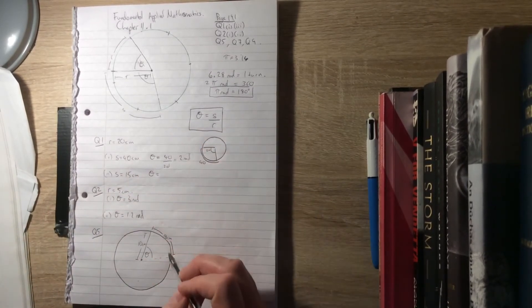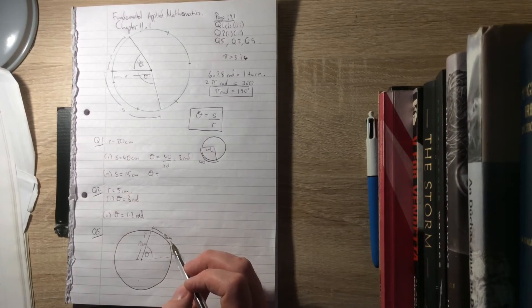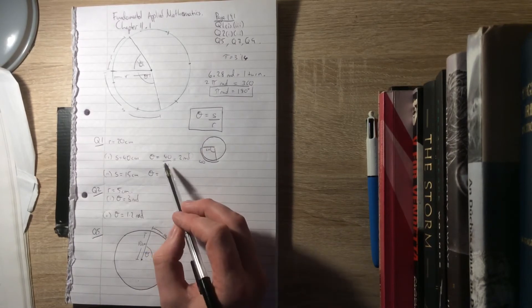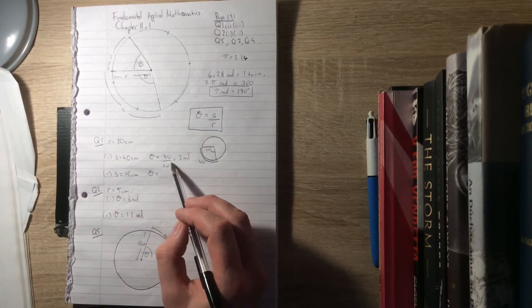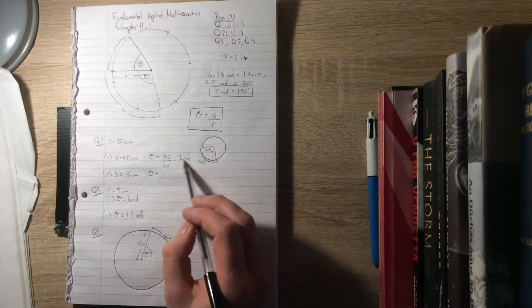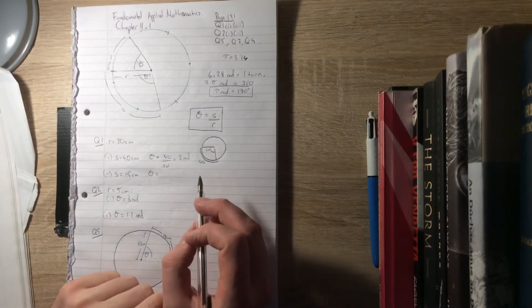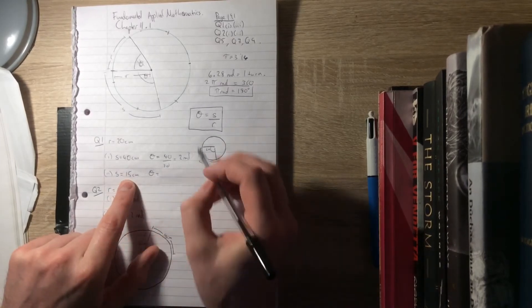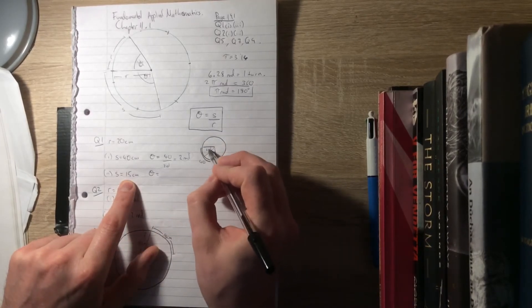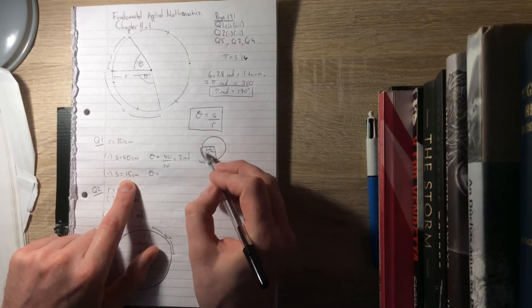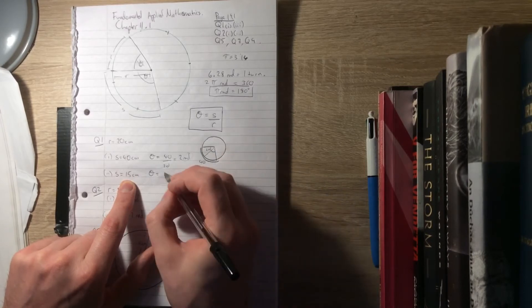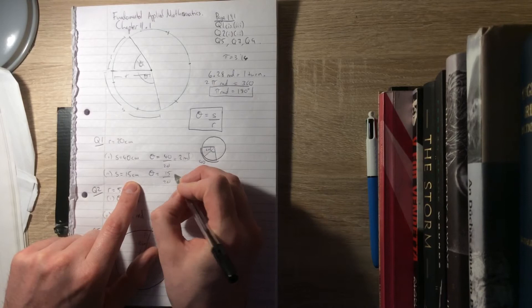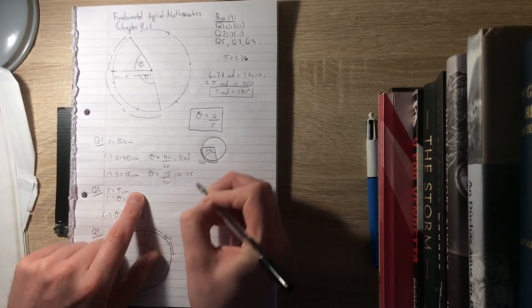You don't actually have to write 'rad' for radians. It's what we call a dimensionless unit. If you look here, centimeters over centimeters cancel, but we often write 'rad' just to show that we're working in radians. The second one: if it's a 15 centimeter arc, it's a shorter arc now, less than one radian. 15 is less than 20, so 15 over 20 is 0.75 radians.